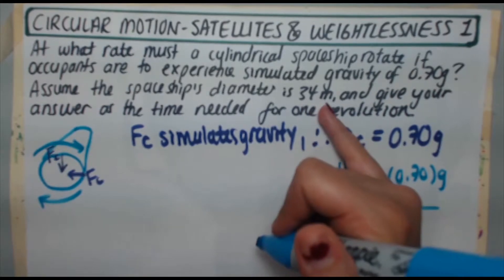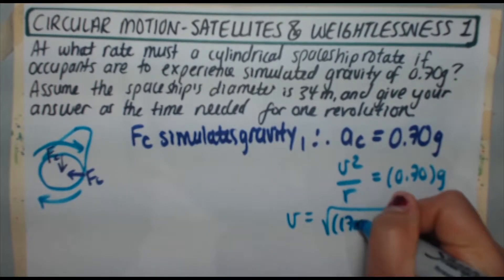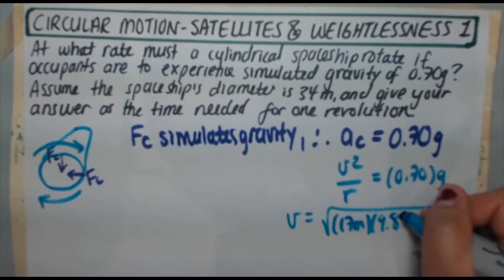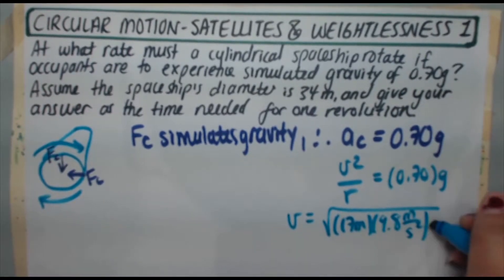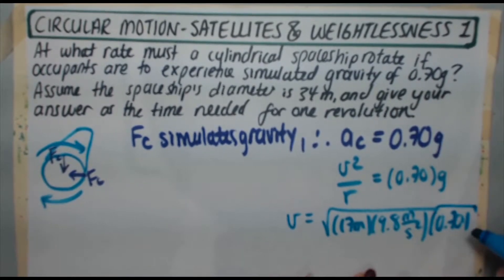The radius, if the diameter is 34 meters, the radius is half of that, it's going to be 17 meters. g is your lovely 9.8 meters per second squared and there you've got your 0.70 in there as well.